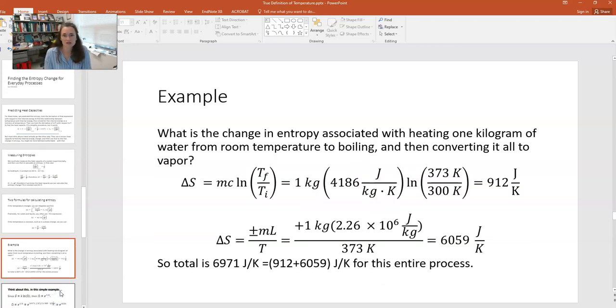Let me do a simple example for you. What is the change in entropy associated with heating one kilogram of water from room temperature to boiling, and then converting all of that into vapor? In other words, it's all boiled away. So first you have to heat it up, and there would be an entropy associated with that. So that delta S would be mc times the natural log of T final over T initial.